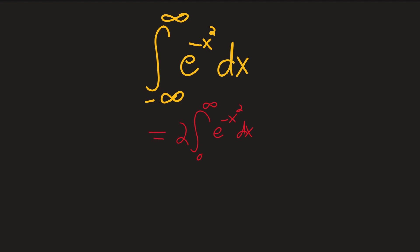And then I'm just going to do a quick u-substitution. Let u equal x squared, meaning that du equals 2x dx, and subsequently du over two times the square root of u is just equal to dx itself, meaning that our integral is equal to the integral from zero to infinity of e to the minus u over the square root of u, du.